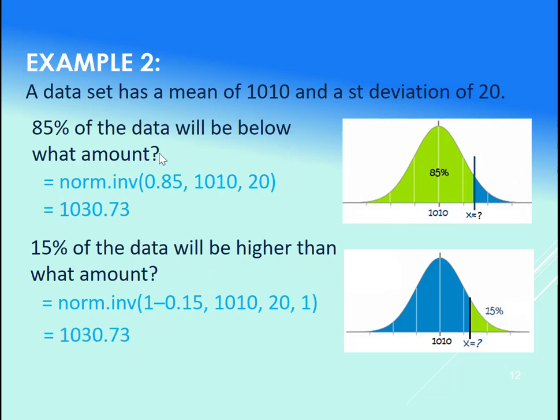But again, if we want the x value related to an area to the left, plug in that area, norm.inv. If we want the x value related to an area to the right, do 1 minus that area within the norm.inv. And let's try this out in Excel.